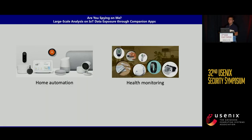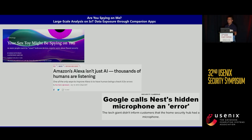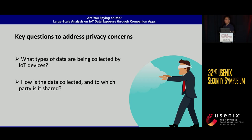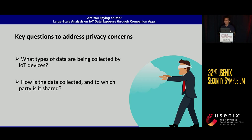People today are increasingly using Internet of Things devices for different tasks, such as home automation and home monitoring. Those devices also introduce privacy concerns to users. For example, there are some sex toys that are reported to not only provide the functionality they claim to, but also collect your everyday activities. To address this privacy concern, we need to ask two simple yet very important questions: what type of data are being collected by these IoT devices, and how is the data collected and to which party is the data shared?